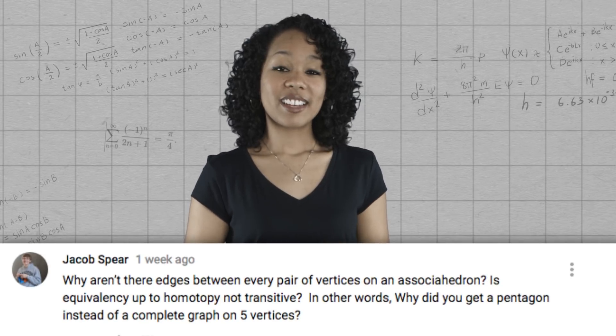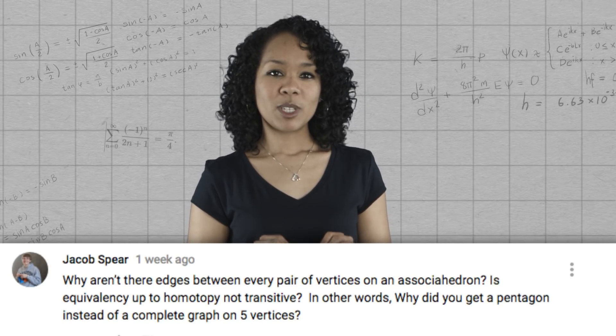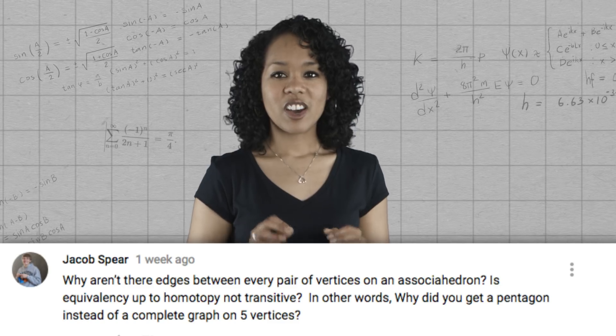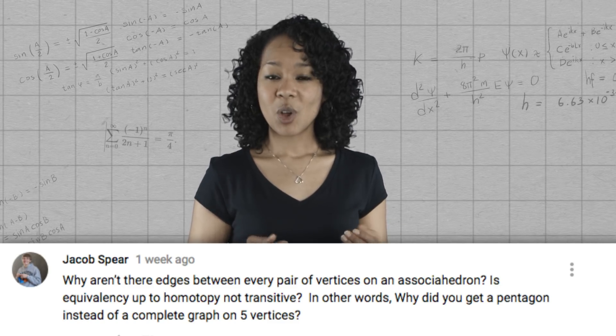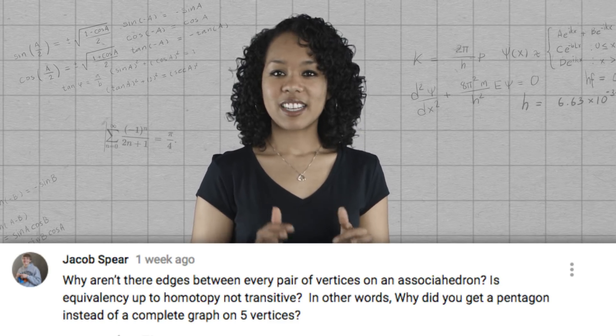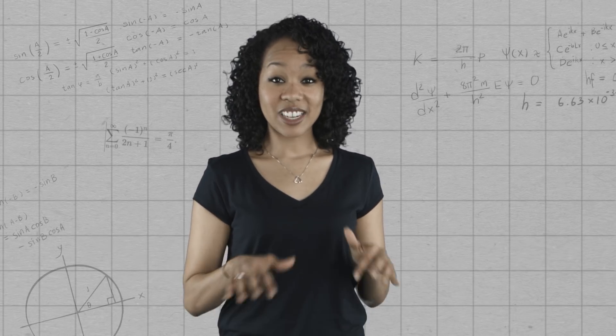Next, Jacob Spear asked a great question. Why aren't there edges between every pair of vertices on an associahedron? For example, why do we get a pentagon instead of a complete graph on five vertices? Great question.